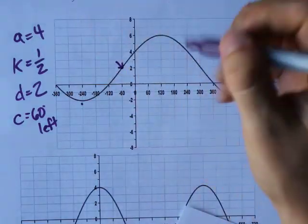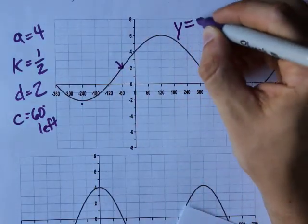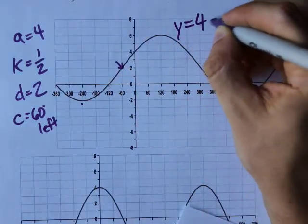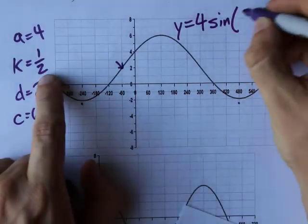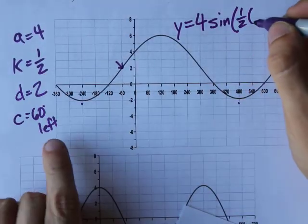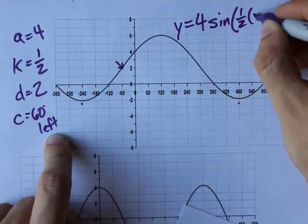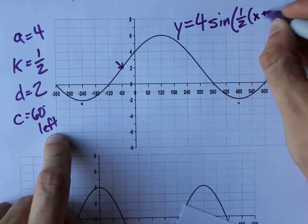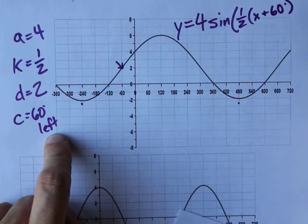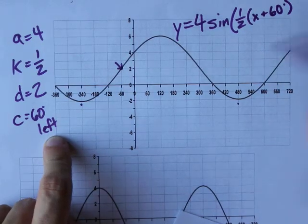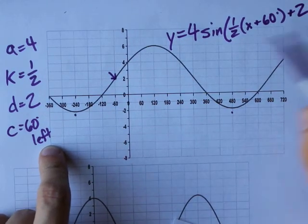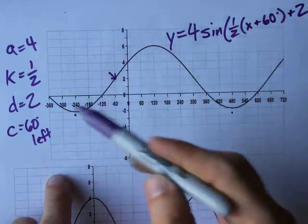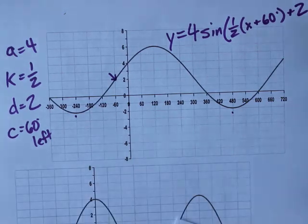Let's put these together. The equation is 4 sine — K goes next, that's one half — the phase shift is 60 left, which means we write plus 60 degrees in the formula, and then the D value of 2 gives us plus 2. There's the equation, and it all came from points on the graph.